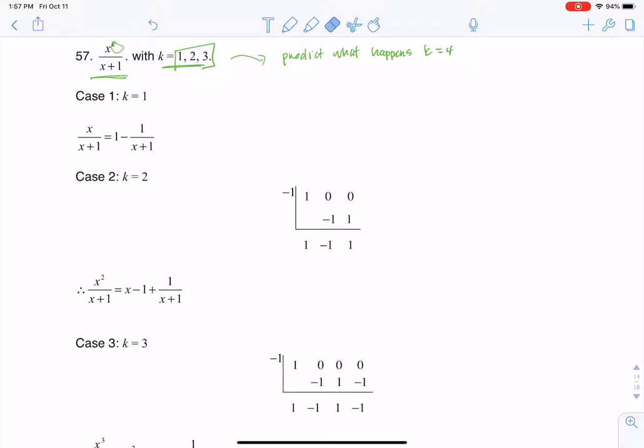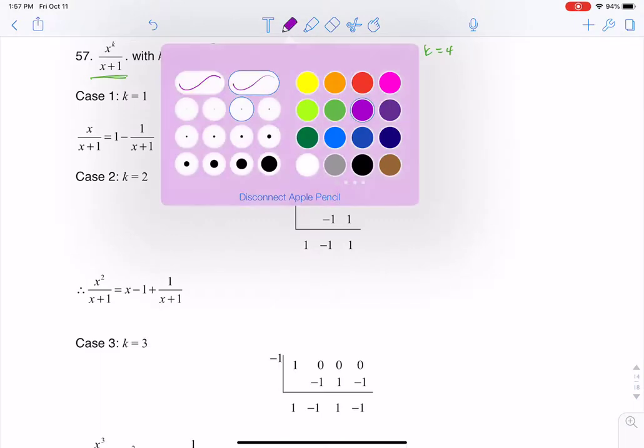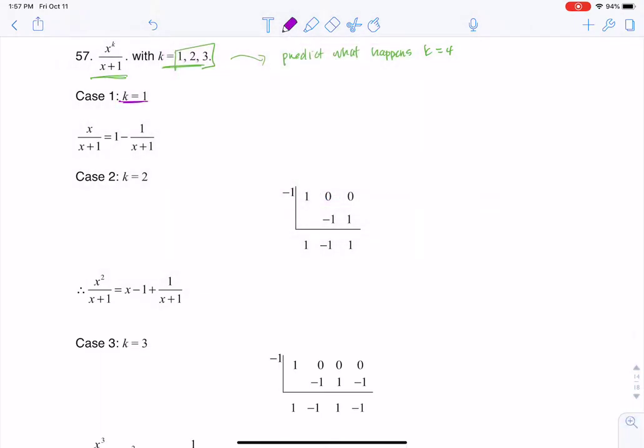So the first thing I took a look at, I'll change pen colors, is I said okay, let's let k equal 1, so I'm going to change that exponent to 1, and that becomes just x over x plus 1, and now you could have used division for this if you wanted to.